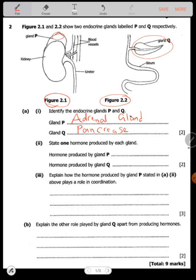State one hormone produced by each gland. What hormone is produced by gland P? Gland P produces adrenalin. Hormone from Q produces insulin and also produces glucagon.